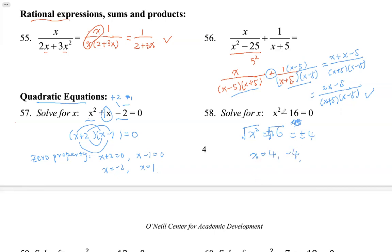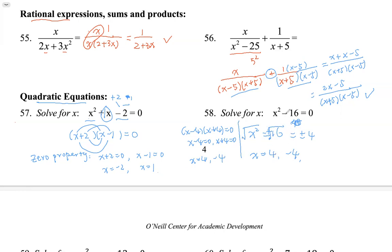If we use the difference of two squares method instead, the answer is the same — we factor as (x minus 4)(x plus 4), then by the zero property, x minus 4 equals zero gives x equals 4, and x plus 4 equals zero gives x equals negative 4. Either method works, but the square root method is faster here since there's no middle term to worry about.